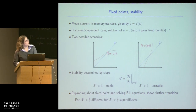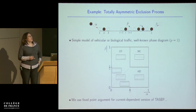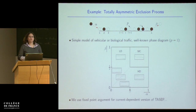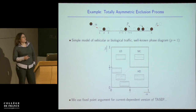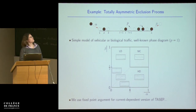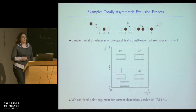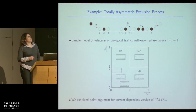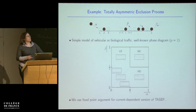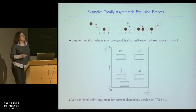Rather than showing the technical details, let me explain how that works with a particular example: the so-called totally asymmetric exclusion process, or TASEP. It does what it says on the tin: I take a one-dimensional lattice where each site can hold at most one particle (that's the exclusion part) and particles only move in one direction — to the right (that's the totally asymmetric part) — with some rate p, but only if there's a space to move into.